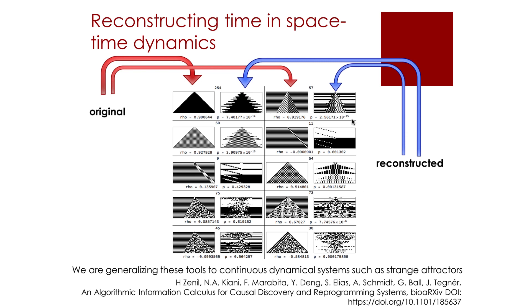You can see again that the reconstruction is very close to the original unscrambled version of the cellular automaton, or the reconstruction is able to extract some key features of the data, such as in the cases of rules 11, 9, or 54. In this case, we were not only able to reconstruct the cellular automaton, but we also have the exact sequence of time steps.